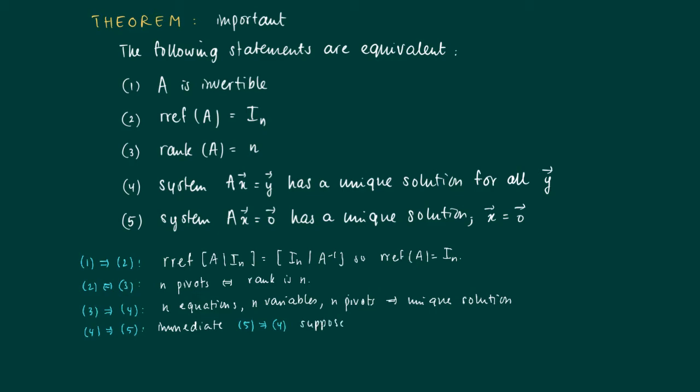The converse holds as well. So assume that we have Ax = 0 has a unique solution x = 0, but that statement 4 does not hold true. We have two solutions for the same equation Ax = y, x1 and x2. We suppose that they are unequal, so we have two different solutions. Then if we look at A times the difference of these vectors, A times x1 minus x2, this equals Ax1 minus Ax2, which is y minus y, equals the zero vector.